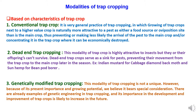Second is dead-end trap cropping. In this modality, the trap crop is highly attractive to insects, but they or their offspring cannot survive. Dead-end trap crops serve as a sink for pests, preventing their movement from the trap crop to the main crop later in the season. Examples include Indian mustard for cabbage diamondback moth, and sun hemp for bean pod borer.